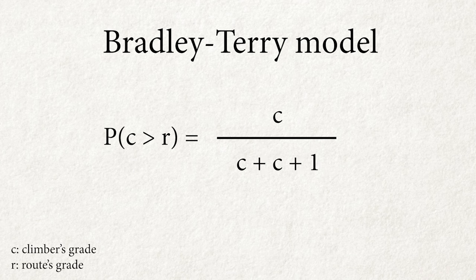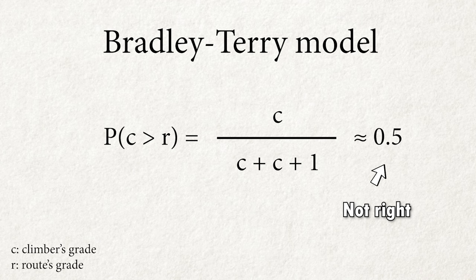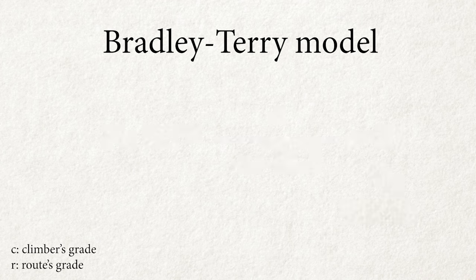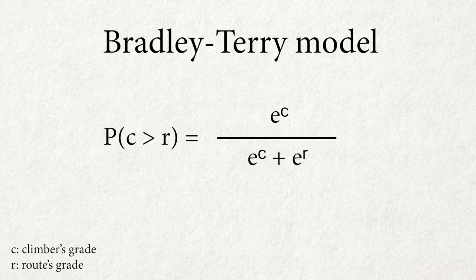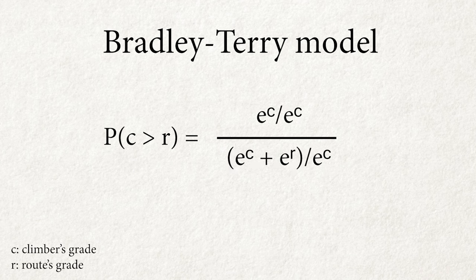However, the problem with the Bradley-Terry model is that incrementing a grade by 1 barely changes the probability of a send, which is far from reality. A better variant is: probability of sending equals e to the climber's grade, over e to the climber's grade plus e to the route's grade. We can further rewrite this by dividing e to the climber's grade into both numerator and denominator, giving 1 over 1 plus e to the minus of the route's grade minus the climber's grade — which is the logistic function. We can also add a scalar m to estimate how much difficulty changes per grade.